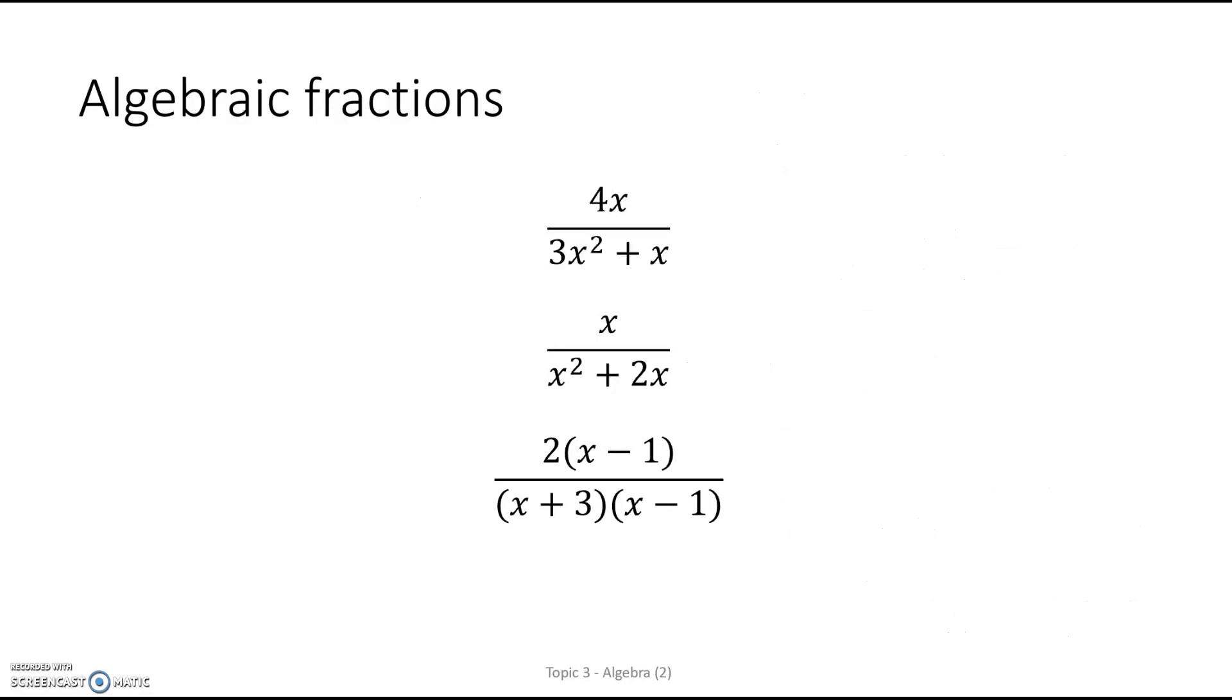Some more examples here. Look for the common factors. Factorize the top. Factorize the bottom. So it would be 4 times x over... X must be the common factor there. 3x plus 1. And it's times so we can cancel the x's and we're left with 4 over 3x plus 1.